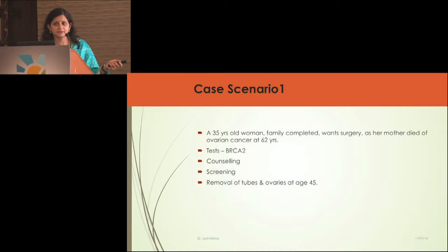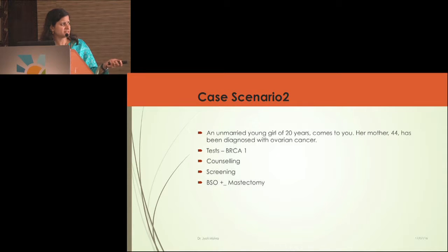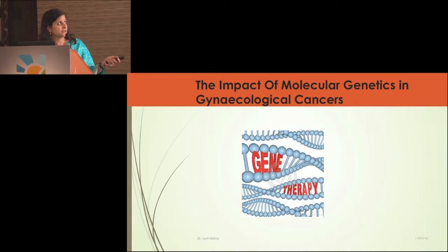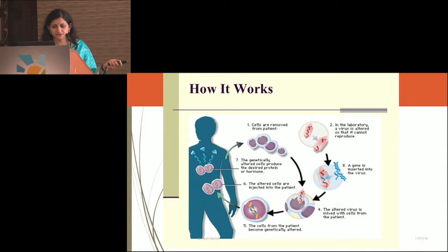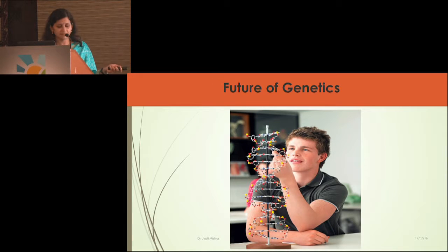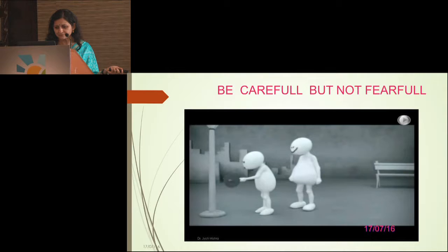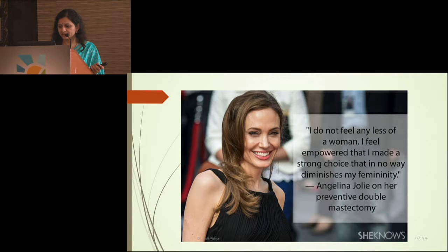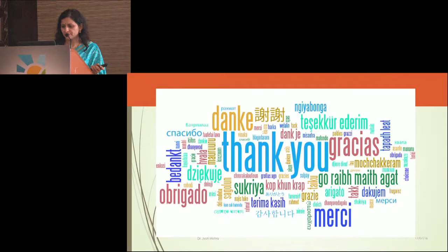In practical terms, there are three case scenarios illustrating how to counsel patients, requiring good familiarity with the NCCN chart. Regarding the impact of molecular genetics, gene therapy involves removing patient cells, inserting good DNA using a viral vector with its own DNA removed, and putting the modified cells back — allowing the lacking proteins to be produced. The future of genetics may allow us to play with our genes. Ending with Angelina Jolie's message: 'I do not feel any less of a woman. I feel empowered that I made a strong choice that in no way diminishes my femininity.'